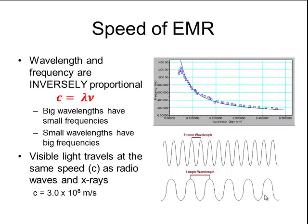Now that letter C is also called the speed of light. And visible light travels at the exact same speed as other types of electromagnetic radiation. So light travels at the same speed as radio waves and x-rays and gamma rays and all of those other kinds of radiation. The speed of light is equal to 3 times 10 to the eighth meters per second.